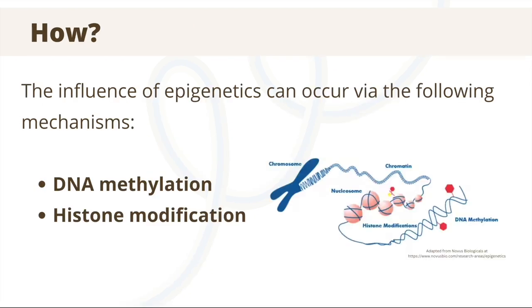So how is this done? The influence of epigenetics can occur via the following mechanisms: DNA methylation and histone modification. It can also occur through other mechanisms, but today we'll just explore these two.